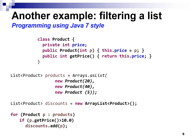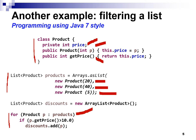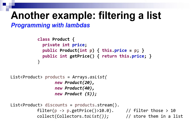Let's see an example of a simple computation — how you would do it without lambdas and with the Java 8 functional programming style. Imagine you have a class Product that has a price, a constructor, and a getter for the price. Then we have a list of products made of three products. We want to obtain a list of discounted products — a product is in discount if the price is bigger than 10. Typically what you would do is create a for loop iterating over this list of products, put a condition, and if the condition is satisfied add the product to the list of discounts.